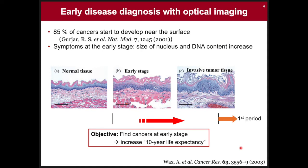If we could have microscopy that meets our interest, we may be able to realize early disease diagnosis. For example, we may be able to identify the enlargement of cell nuclei—the blue dots here—occurring at the early stage of cancer. This will be much earlier diagnosis than the current practice, which aims to detect malignant polyps at a later period.